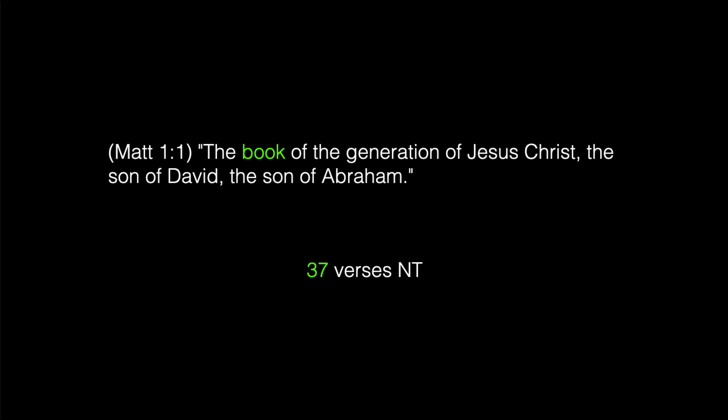The first noun in the Old Testament was God, occurring in 37 books of the Old Testament. The first noun in the New Testament is the word 'book' — Matthew 1:1: 'The book of the generation of Jesus Christ, the son of David, the son of Abraham.' The word 'book' occurs in 37 verses of the New Testament, and the word 'generation' occurs exactly 37 times in the New Testament. Notice it contains the word 'gene' — think of the 37 genes in the mitochondrial DNA.